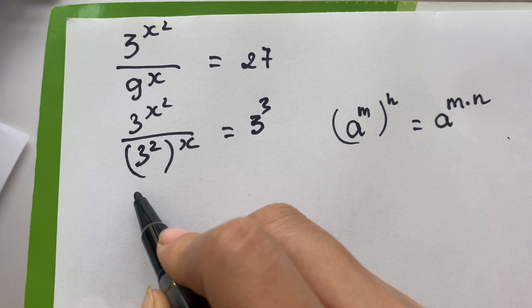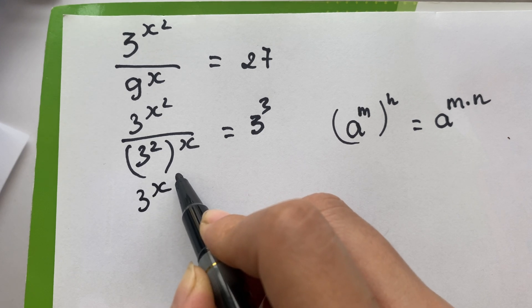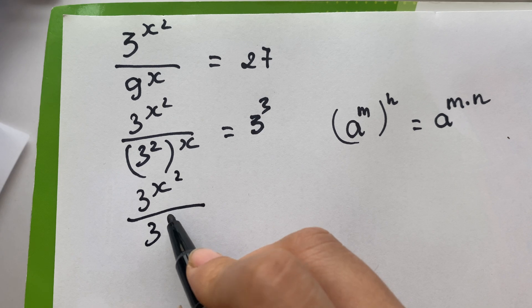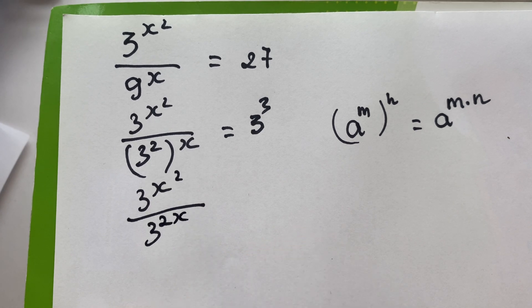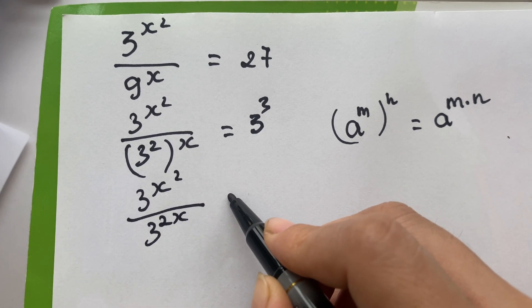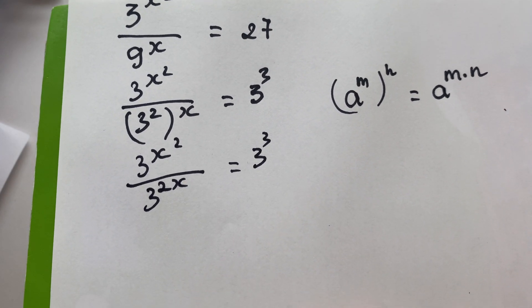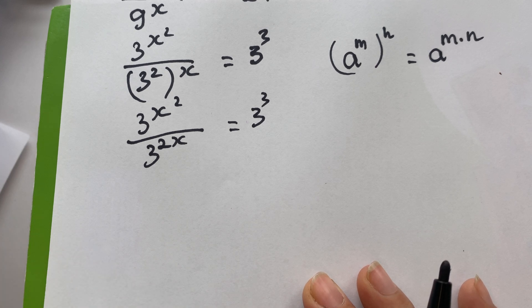So we have 3 power x square over 3 power 2x equals 3 cube. And here we need to apply the division of exponents with same base but different powers.